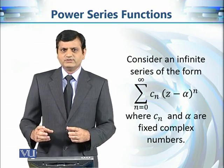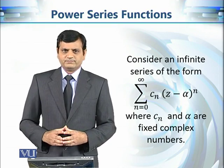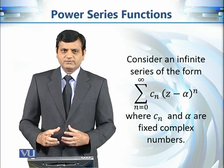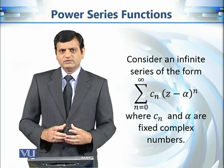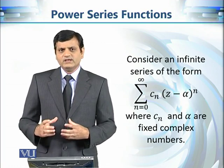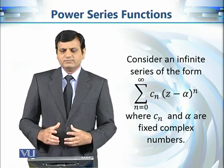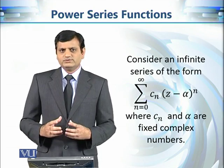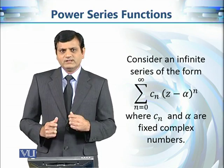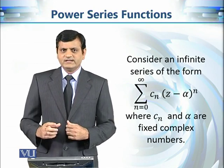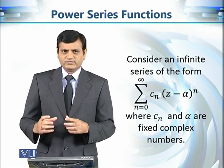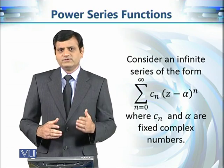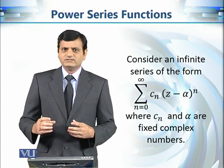Here, α is a fixed complex number, and c₀, c₁, c₂, and so on are also complex numbers. In this infinite series expression, you can also see the symbol z, and the value of z is not mentioned. So first we fix α and c₀, c₁, c₂, and so on, but z is not fixed — z is a variable.